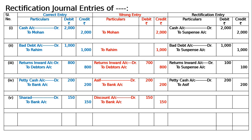Now Sarad's account will come in and Discount will go out. The rectification entry is: Sarad account debited to Discount account, 150 debit and 150 credit. Being Sarad's account was not debited and by mistake Discount account was debited, now rectified by debiting Sarad's account and crediting Discount account to nullify the effect of wrong debiting to Discount account.